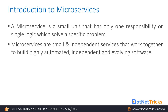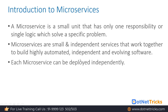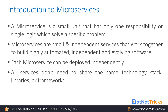Microservices are independent and work together to build a highly automated, independent, and evolving software. This is important for enterprise-grade applications like Facebook, Twitter, and Netflix, which evolve on a daily basis. Each microservice can be deployed independently, and they don't even need to share the same technology stack — one microservice might be built using .NET, another using Java, Python, or Node.js.